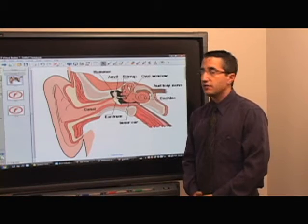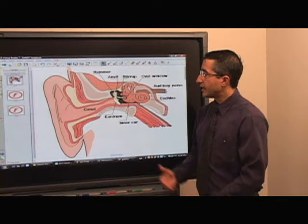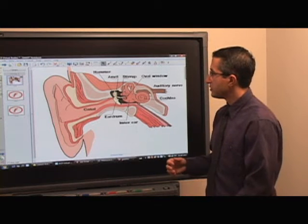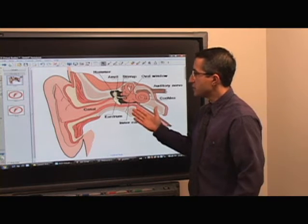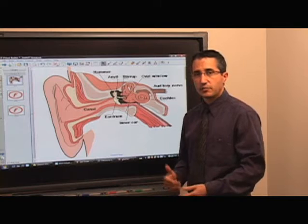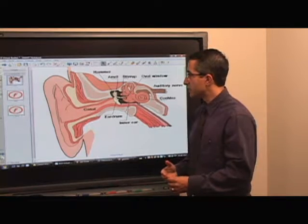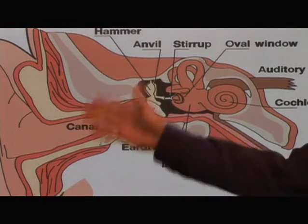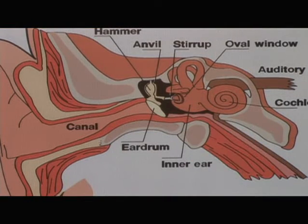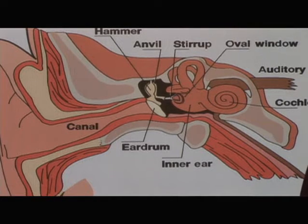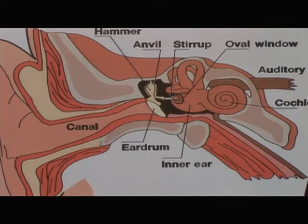We're in Notebook right now, and I have a three-page file here. This is a static two-dimensional picture. It's a diagram of the inner ear, and we can take a look. This is something that students and adults are very familiar with because this is often what's found in books.